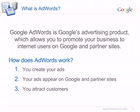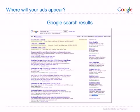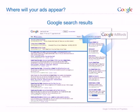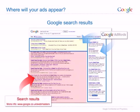Great. But where will your ads actually appear? AdWords ads appear on the Google search results page above and to the right-hand side of the search results. The search results in the main section of the page are completely separate to AdWords. You cannot influence the search results or alter the way your site appears in the natural search results by using AdWords.